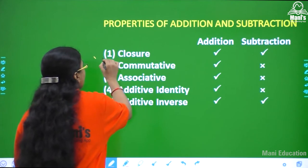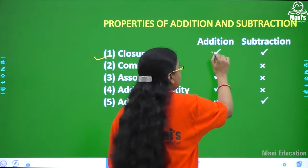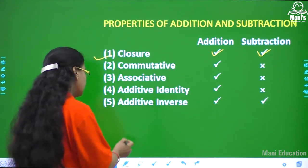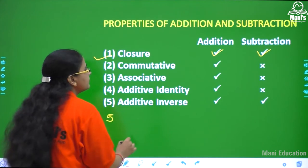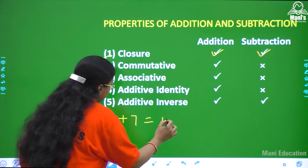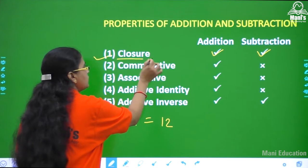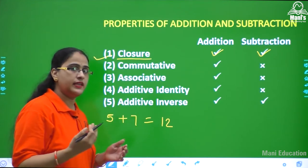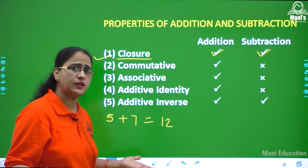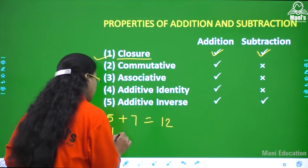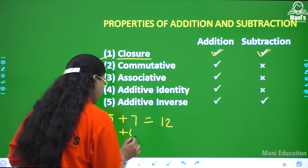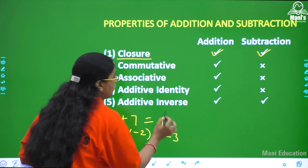First of all, we will start the closure property. Here there is a tick mark indicating it applies. We check: 5 plus 7, how much is the answer? 5 plus 7 equals 12. This is the closure property — when we add any two integers, we get a third integer. For example, minus 1 plus minus 2 gives minus 3.